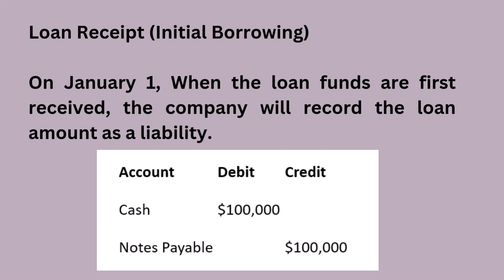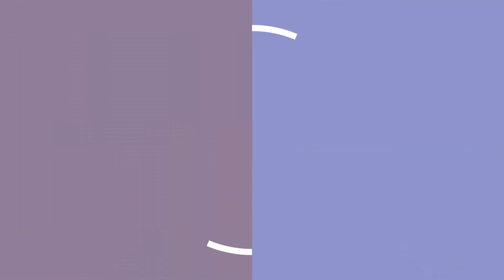Here are the journal entries. On January 1st, when the loan funds are first received, cash is debited to reflect the cash received, and notes payable is credited to record the obligation to repay the loan. Each month, the company accrues $666.67 of interest, even though the payment is not due until the end of the quarter. At the end of each month, interest expense is debited because the company is recognizing the expense incurred, and interest payable is credited because the company has a liability for interest accrued but not yet paid. This entry is made at the end of each month for a total of $8,000 in accrued interest by year's end.